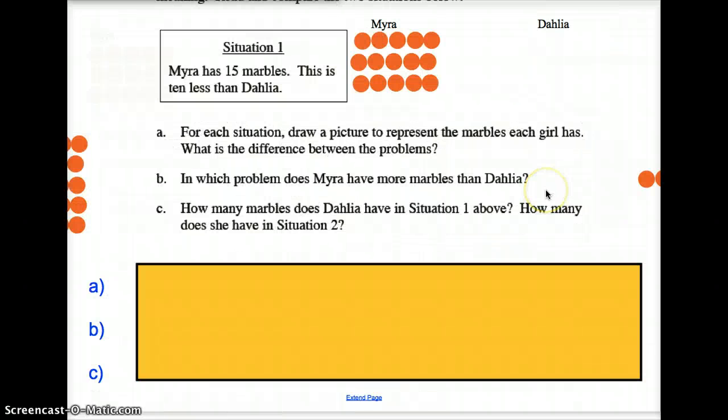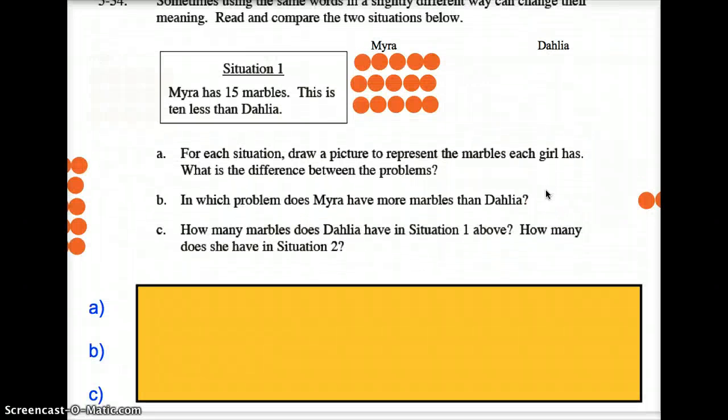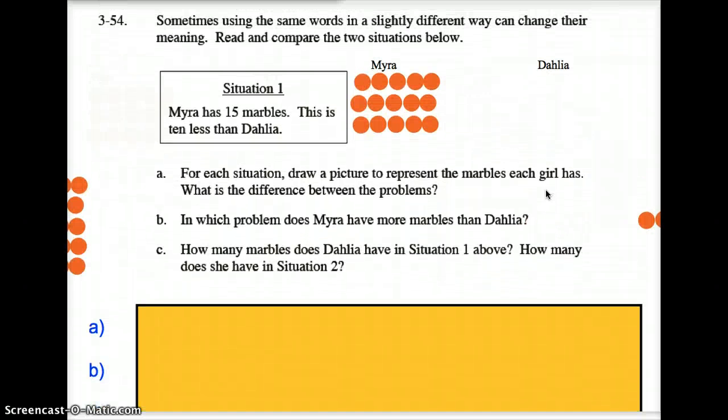Let's take a look at this situation for number 54. Sometimes using the same words in a slightly different way can change their meaning. Situation number one: Myra has 15 marbles, as you can see I'm representing 15 marbles right here with the orange marbles. This is 10 less than Delilah.